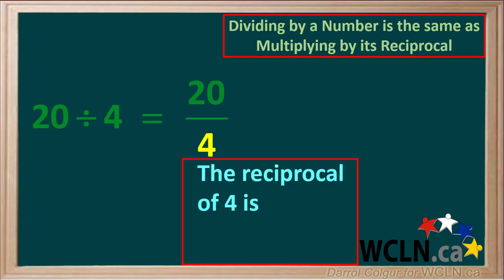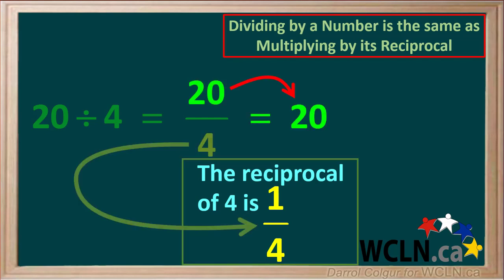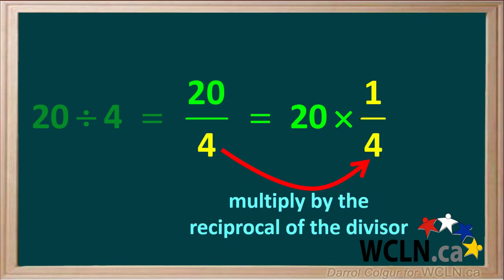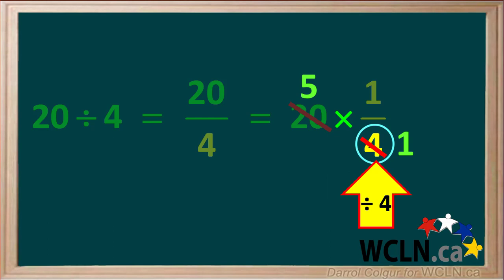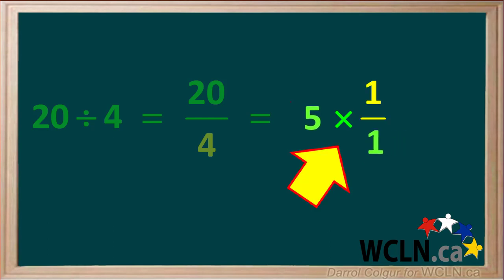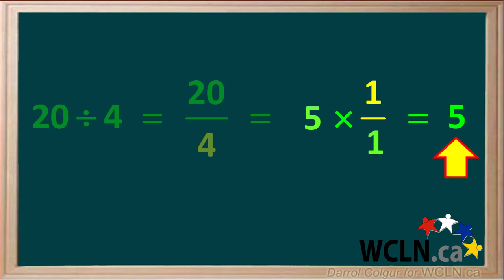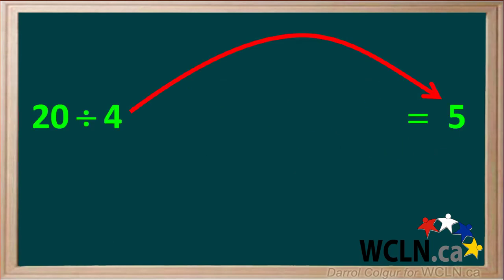The reciprocal of the divisor 4 is 1 over 4. Now we'll take the numerator 20 and multiply it by the reciprocal of the divisor, which is 1 quarter. So 20 over 4 is the same as 20 times 1 quarter. We see that 20 and 4 are both divisible by 4, so we can divide each of these by 4 to simplify. 20 divided by 4 is equal to 5, and 4 divided by 4 is equal to 1. So this is equal to 5 times 1 over 1, which is equal to 5. This makes sense because we know that 20 divided by 4 is equal to 5.